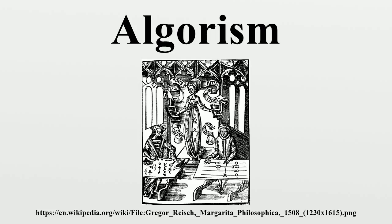Etymology: The word algorithm comes from the name Al-Qarizmi, a Persian mathematician, astronomer, geographer and scholar in the House of Wisdom in Baghdad, whose name means the native of Qarizm, a city that was part of the greater Iran during his era and now is in modern-day Uzbekistan.